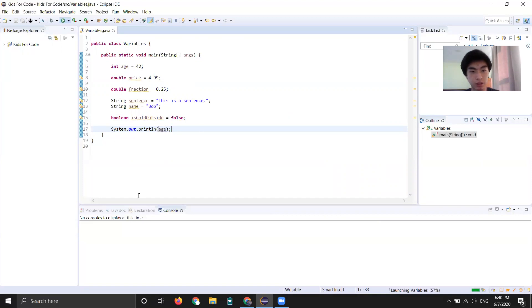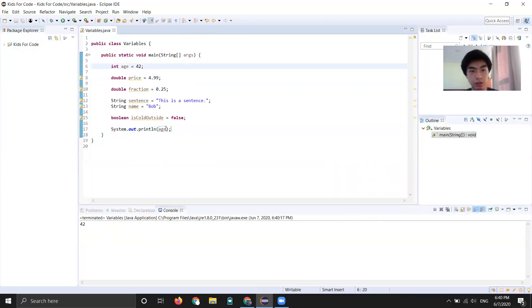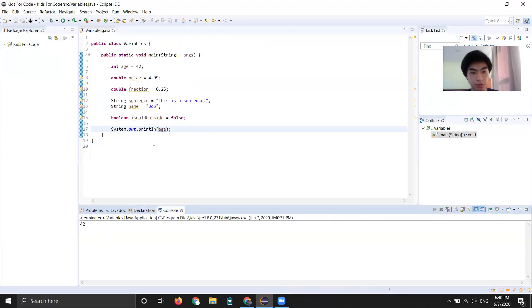And this will print the value of the variable. It's not going to print the word age. If I wanted to print the word age, I would put quotes around it, right? That would print age. See, the word age. But I want to print the variable age. So I am not going to put quotes around it. I am going to just put the word age, the variable name age, and it'll spit out 42. And that's what we want.